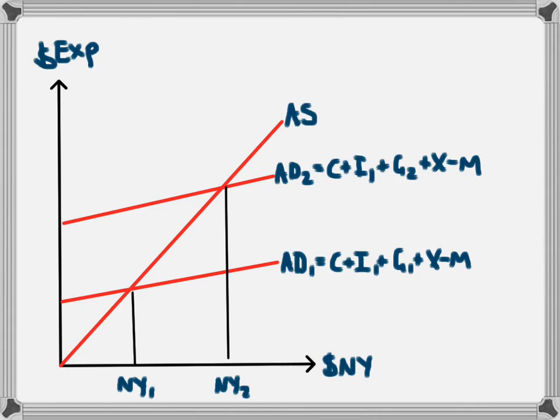If you don't understand what this diagram is showing, you should go and watch the video on expansionary and contractionary fiscal policy in the aggregate demand and aggregate supply model. Further, you could go backwards to see how aggregate supply and aggregate demand are determined. There are videos on all of these topics on this channel.